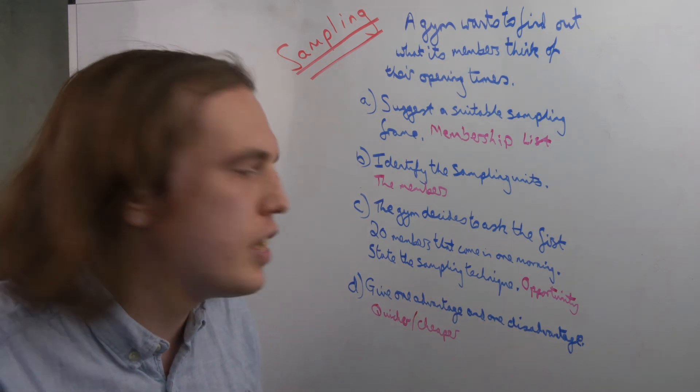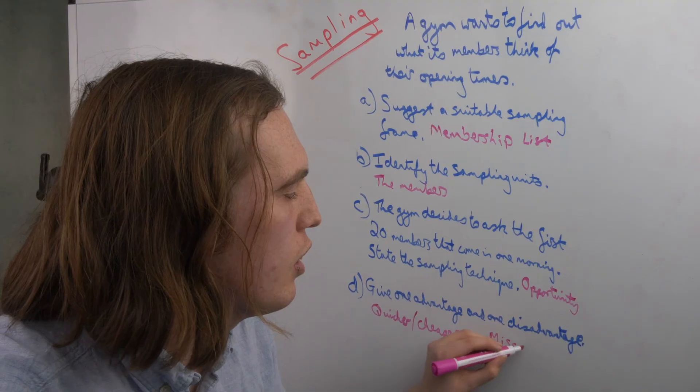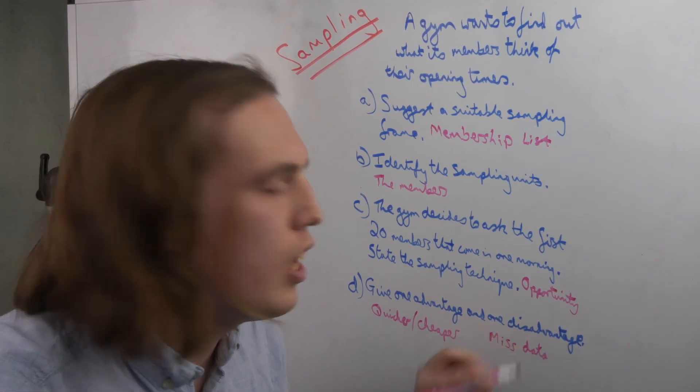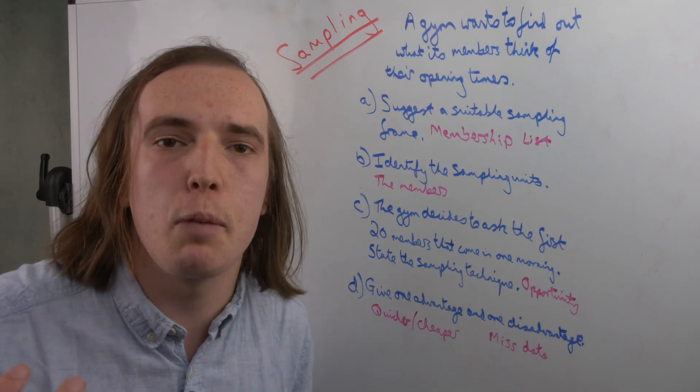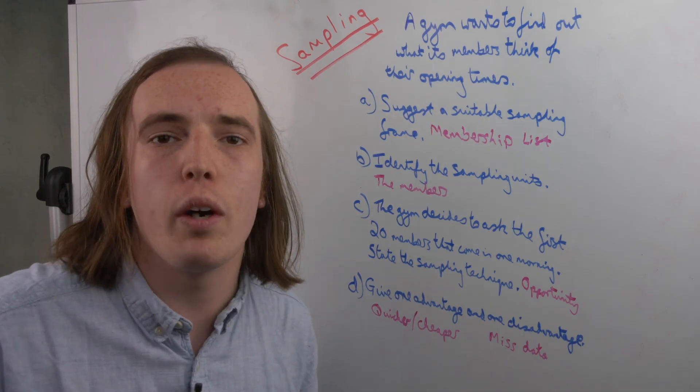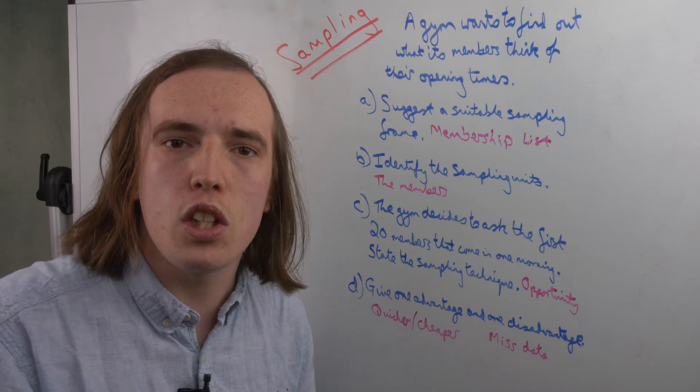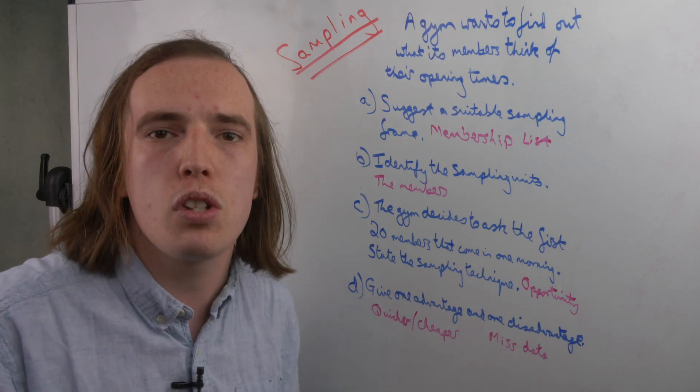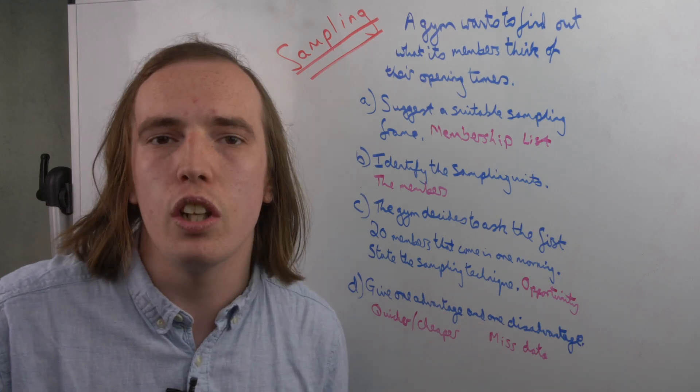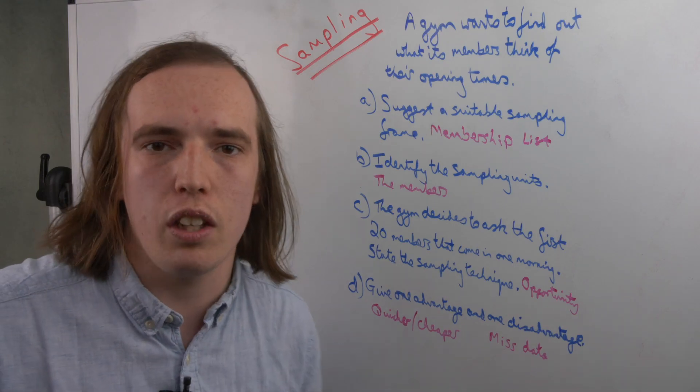One disadvantage, though, is that you could miss data. If you're just asking those first few people, maybe—again, they either came in a group or there's a reason why they came in first. They're going to have something in common, potentially. And so if you're just looking at one subgroup within the members, you're missing information that could have been representing what all the other members think.